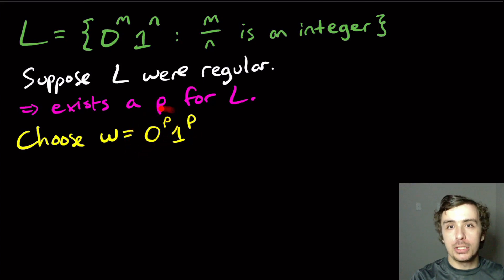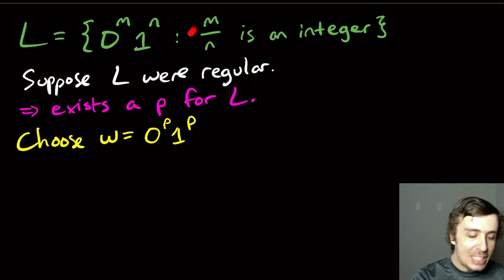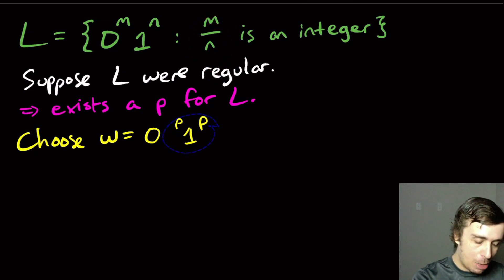So then what would happen is, what if we had the decomposition where we took away p characters? So the x and y bit, the first two parts, occupied all of these zeros right here. Then what would happen is that if we took away all p of those characters, which we're allowed to do when pumping down, it might be that we have zero zeros there. And so this fraction will be zero, and that is allowed according to the language, but it's not the conclusion we wanted. We wanted to have something that is not an integer. So this idea will not help us.